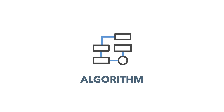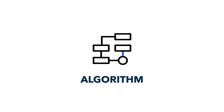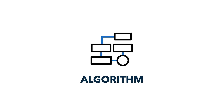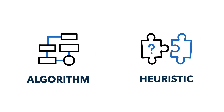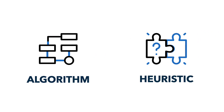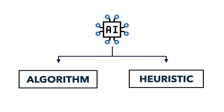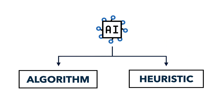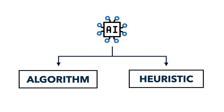You may have heard of the term algorithm before, but what you may not know is what an algorithm actually is, or what a heuristic is. Algorithms and heuristics are related but distinct processes that play an important role in how digital systems, including AI, think and make decisions. Let's break it down.